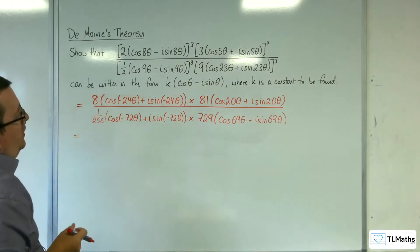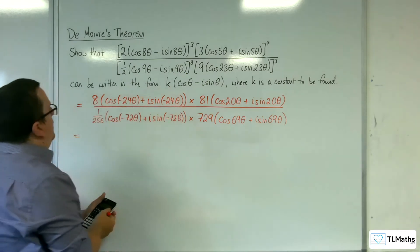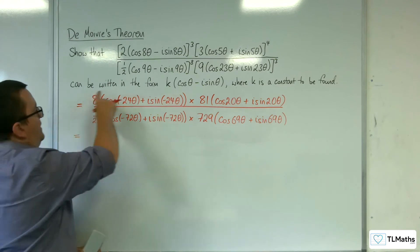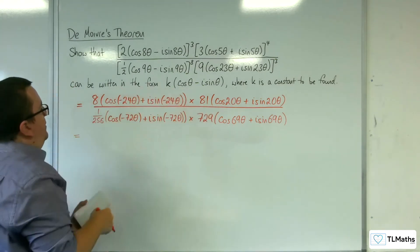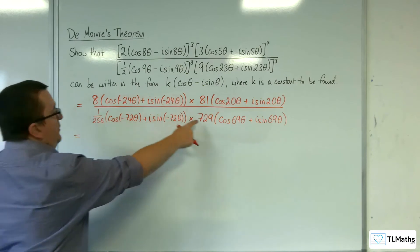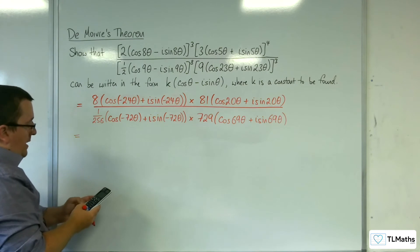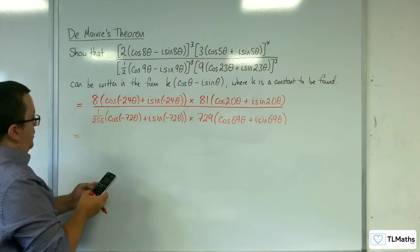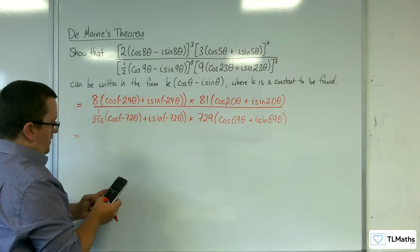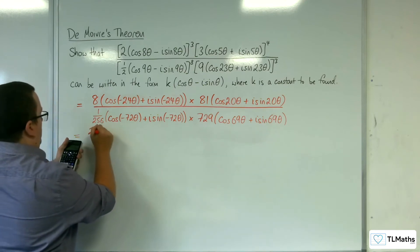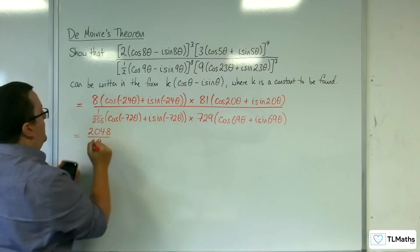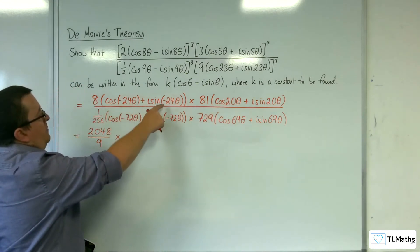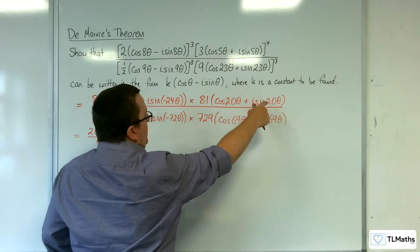So in the numerator we've got 8 times 81, and in the denominator 1 over 256 times 729. So we've got 8 times 81 divided by 1 over 256 times 729, and that gets us 2048 over 9. Then in the numerator we've got cosine of minus 24 theta plus i sine of minus 24 theta, times cosine 20 theta plus i sine 20 theta.